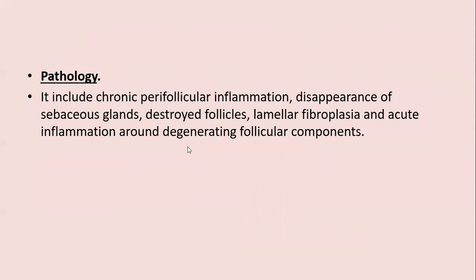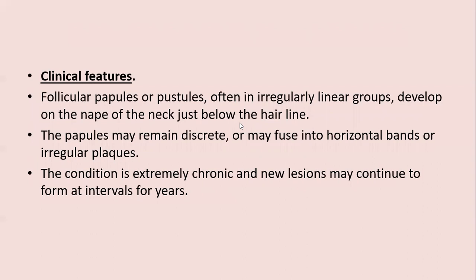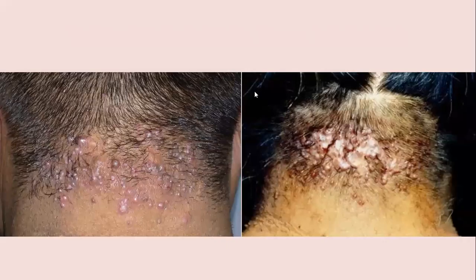Pathology includes chronic perifollicular inflammation, disappearance of sebaceous glands, destroyed follicles, lamellar fibroplasia, and acute inflammation around degenerating follicular components. Clinical features: follicular papules and pustules, often in irregularly linear groups, develop on the nape of the neck just below the hairline. Papules may remain discrete or fuse into horizontal bands or irregular plaques. The condition is extremely chronic and new lesions may continue to form for years; these follicular papules later coalesce to form thick hypertrophic scarring.